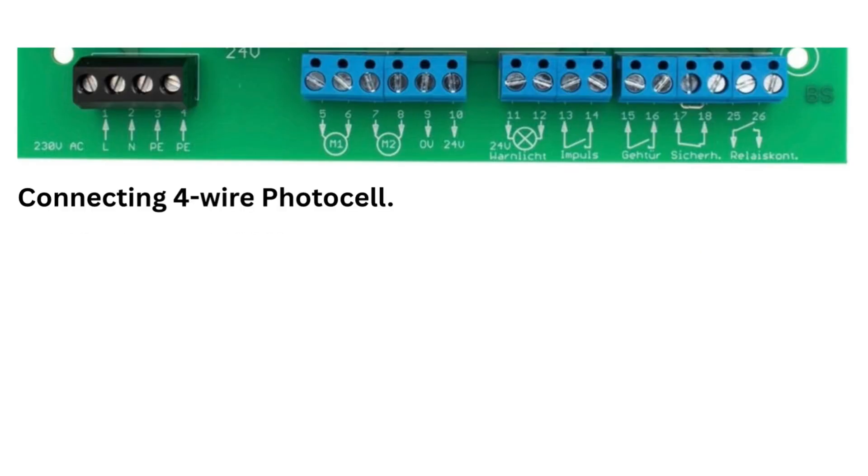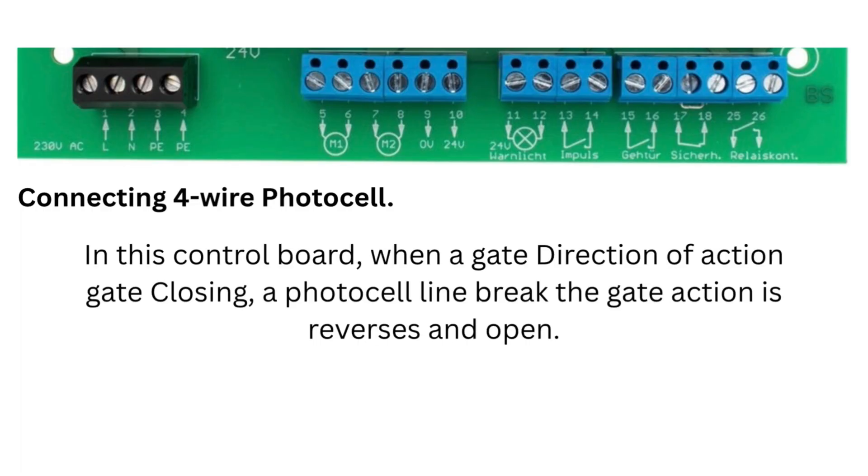Connecting 4-wire photocell. In this control board, when a gate direction of action is gate closing, a photocell line breaks, the gate action reverses and opens.